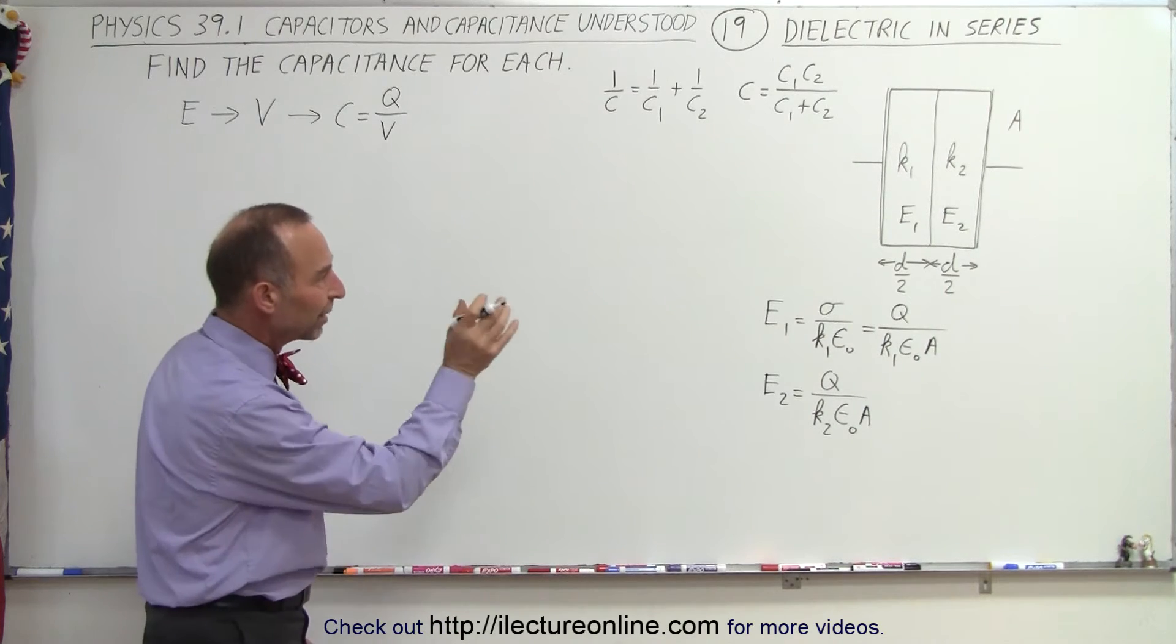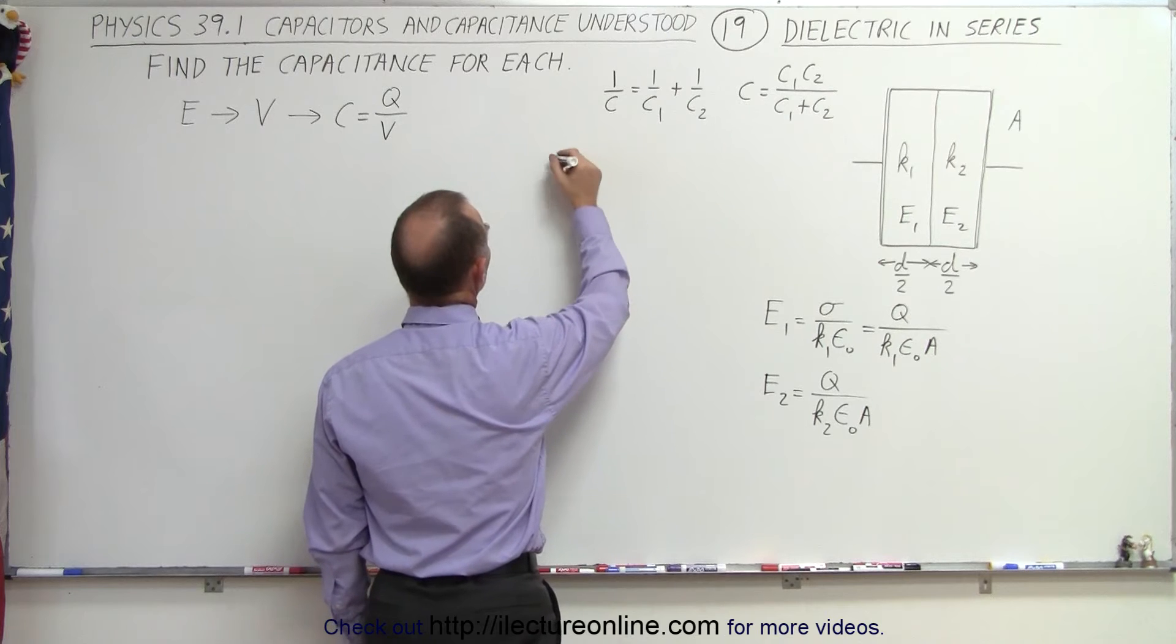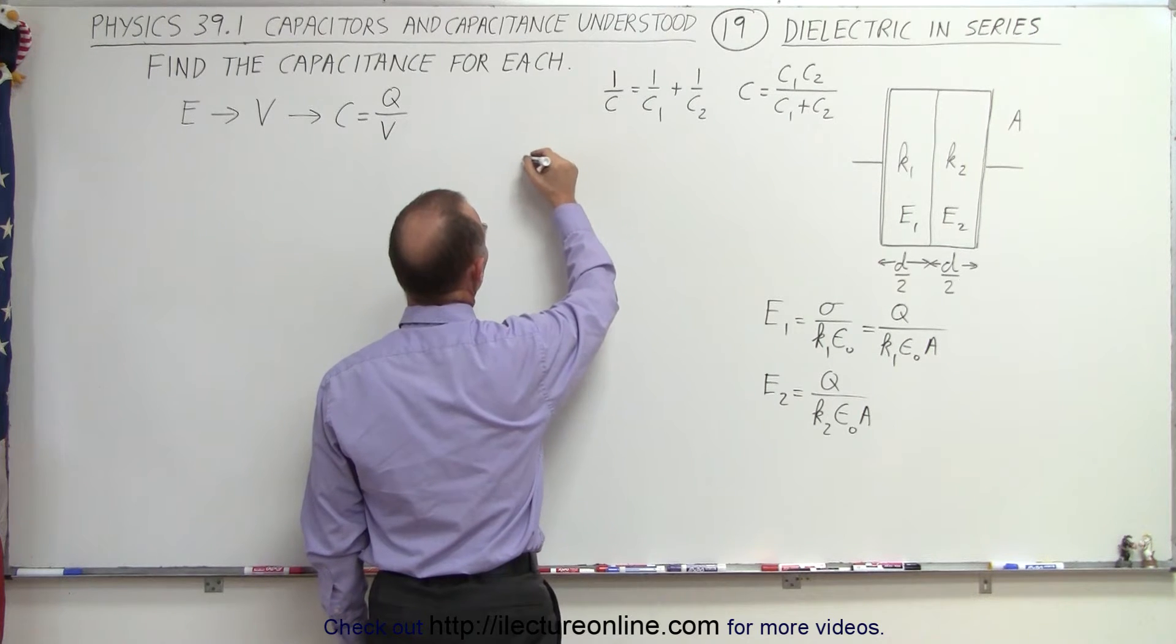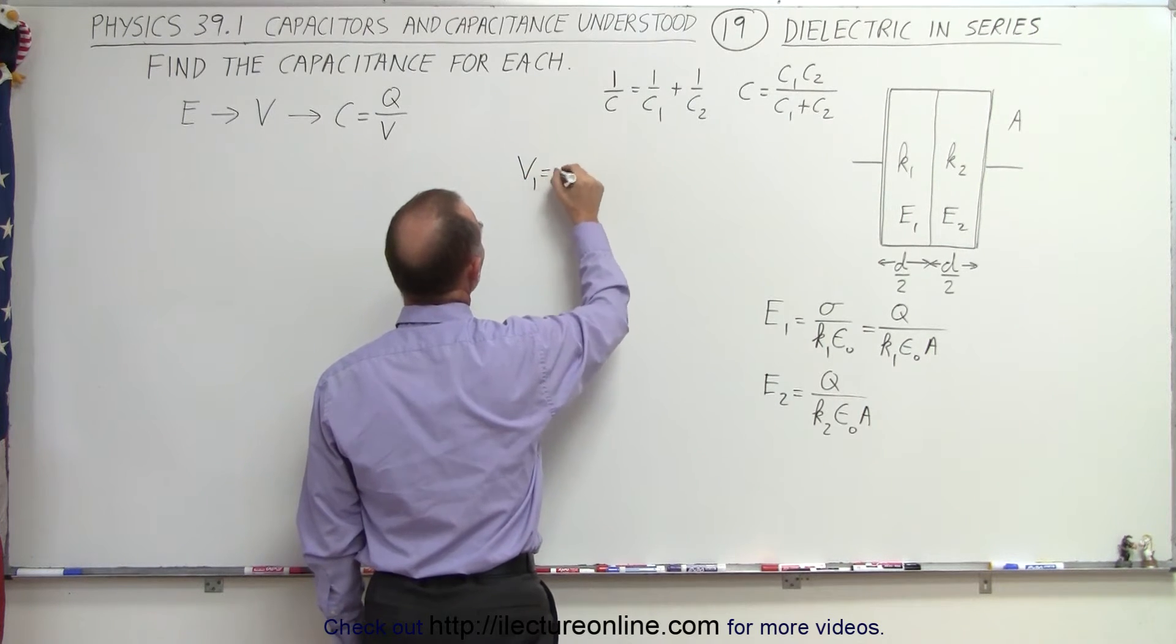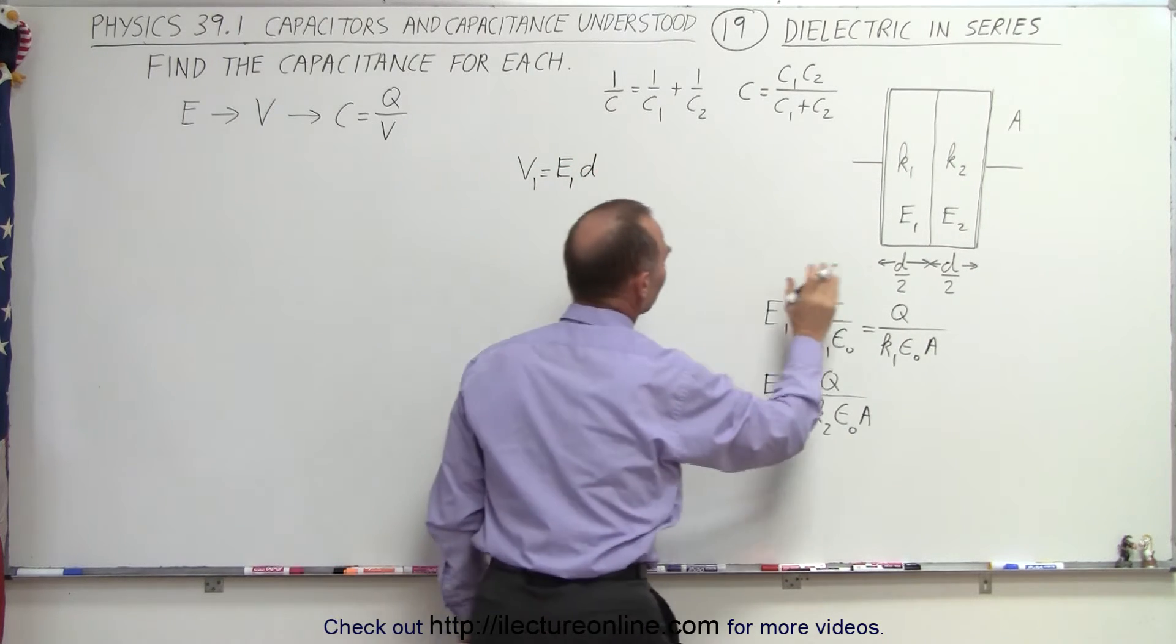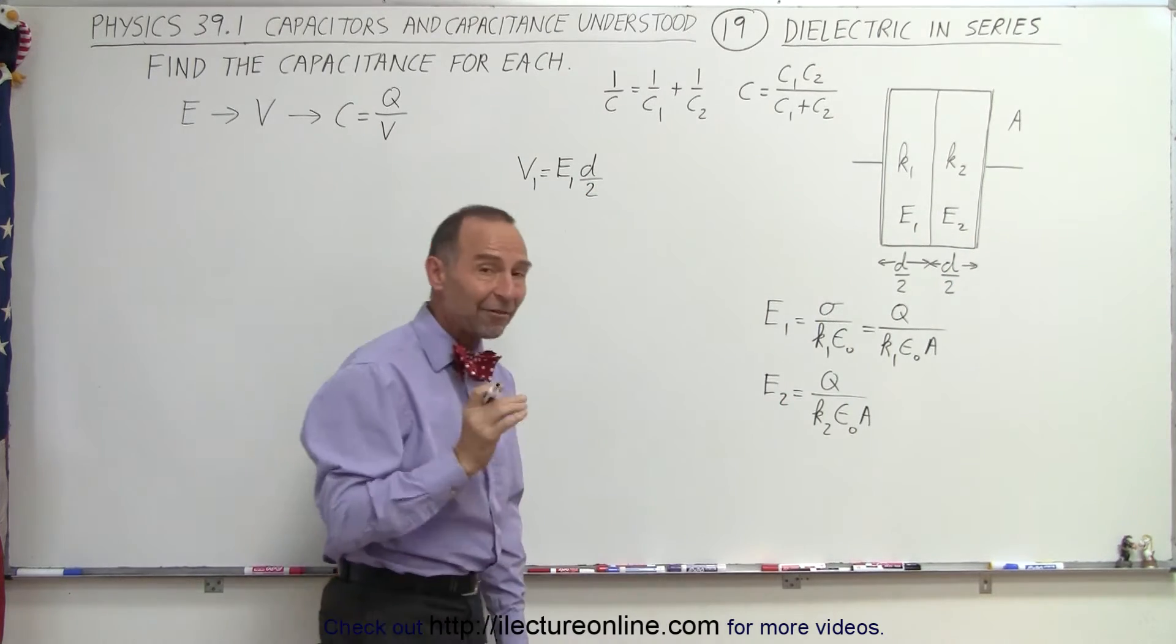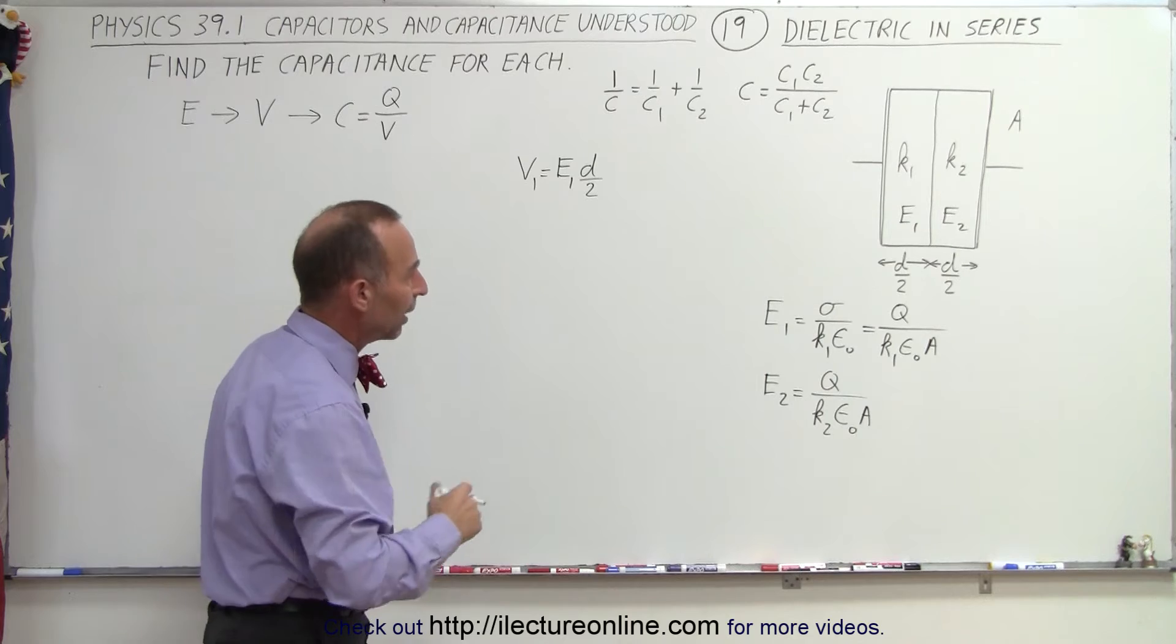Next, we want to find the potential difference across each section. And we know that the voltage of the potential difference V1 would be equal to the electric field in that region times the distance. And so in this case, it would be d divided by 2, because each dielectric is only half the width of the capacitor.